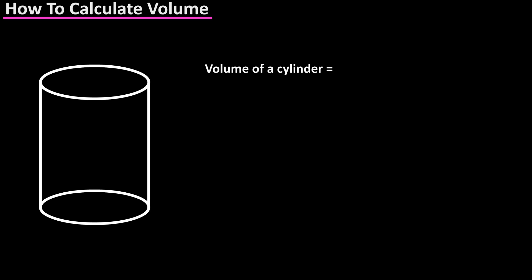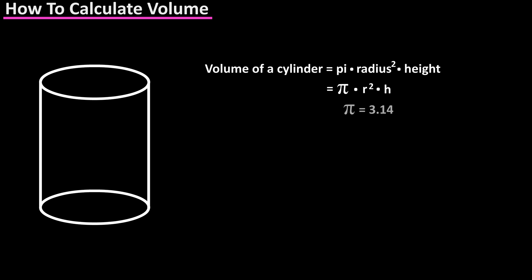The formula for calculating the volume of a cylinder is pi times R squared times H. Pi is a constant that is approximately equal to 3.14, R is the radius of the circular cross section of the cylinder, and H is the height of the cylinder.